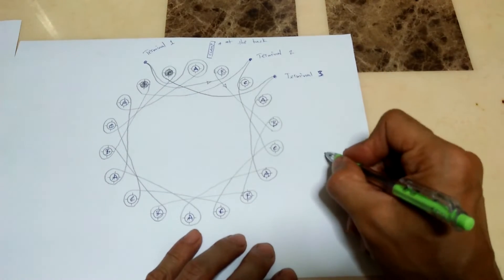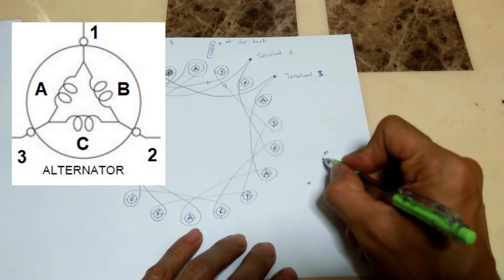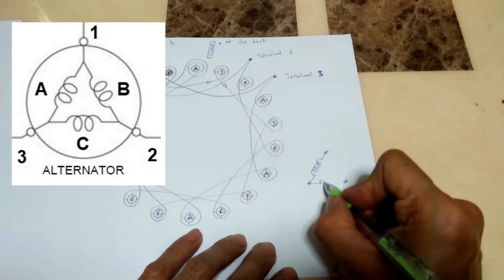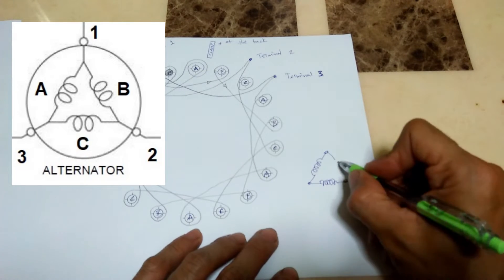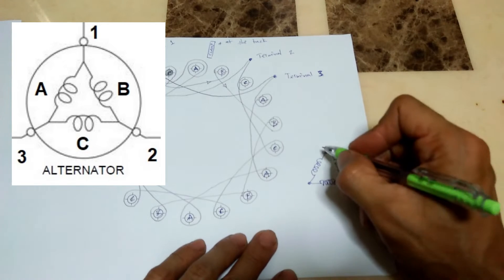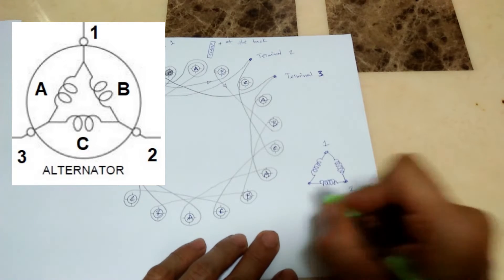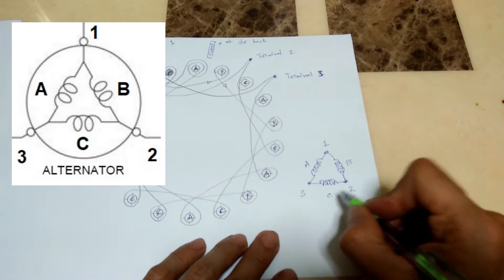This is a delta three-phase connection and this is how the circuit diagram is written. There are six poles per coil and a total of 18 poles corresponding to all three coils of the delta configuration.